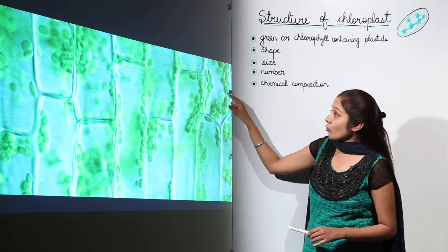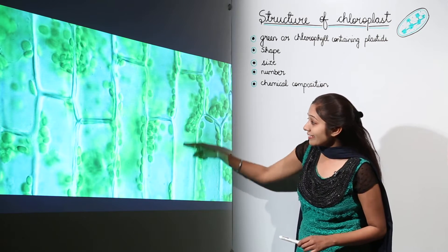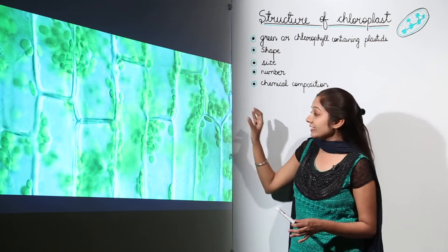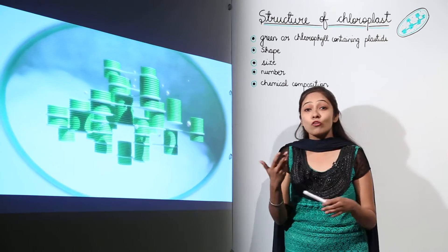You see these oval-shaped structures moving inside the cells—these are chloroplasts. They are the site of photosynthesis reactions.